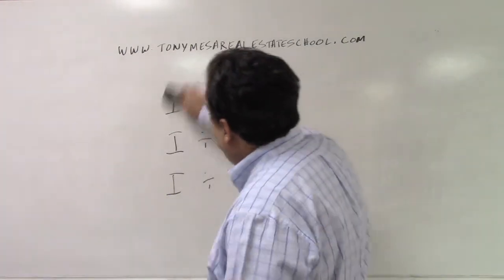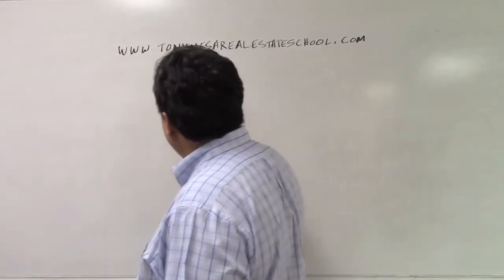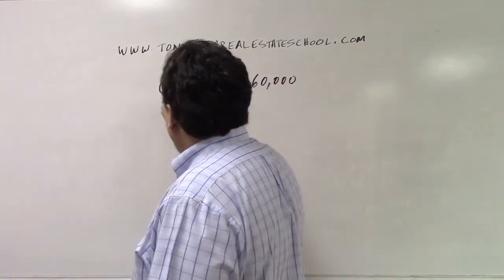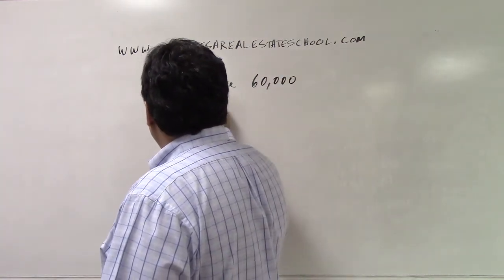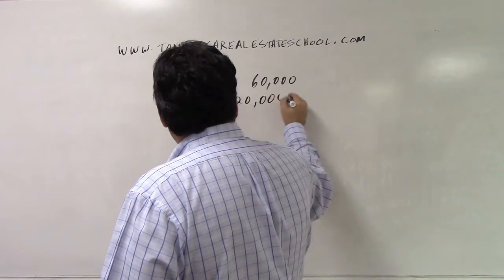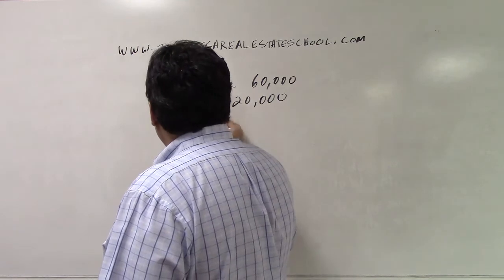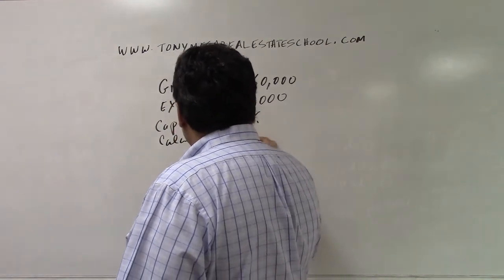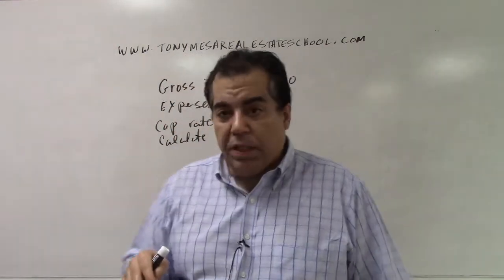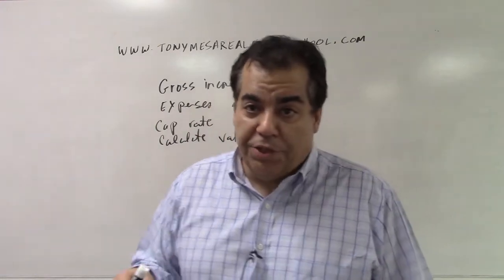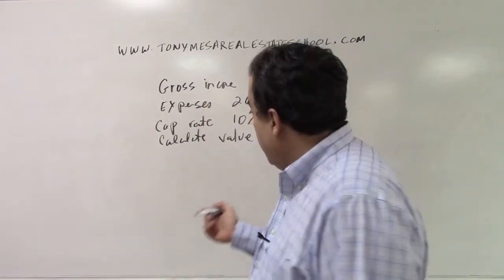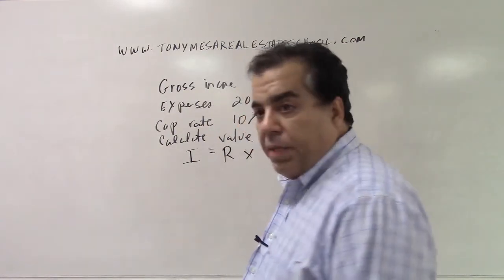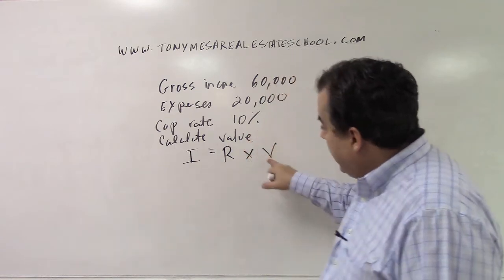Let's use Irv the Appraiser as an example. Say you have a gross income of $60,000, expenses of $20,000, and a cap rate of 10%. You're asked to calculate value — the property value — so we're dealing with Irv the Appraiser. The first thing I do is write down I = R × V.